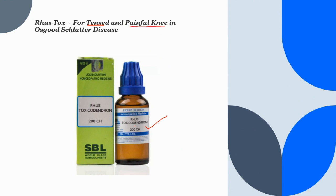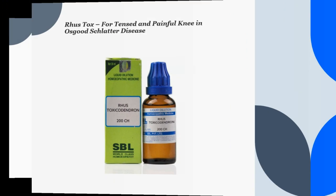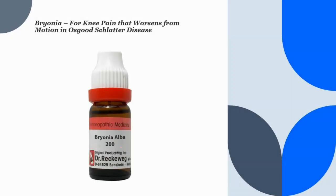The next homeopathic medicine is Bryonia Alba, an excellent medicine for knee pain that worsens from motion in Osgood-Schlatter disease. Keeping the knee at rest relieves the pain. The knee is usually painful to touch and may be swollen, and the knee pain also feels stiff. Additionally, pain in the tibia or shin bone may appear, mainly of a tearing nature.